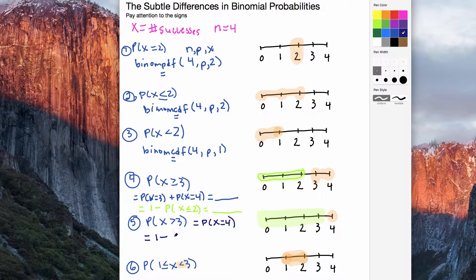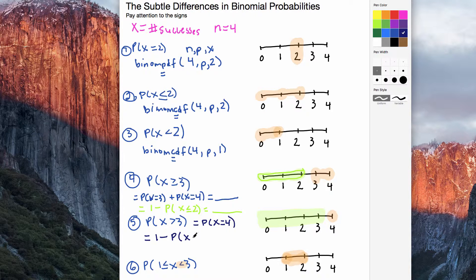We'll take what is left over and what we don't want to add into it. We don't want to add 0, 1, 2, or 3. So probability that x is less than or equal to 3. That's what we're going to be removing.